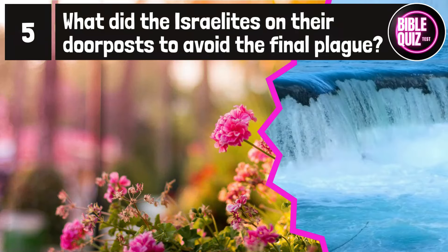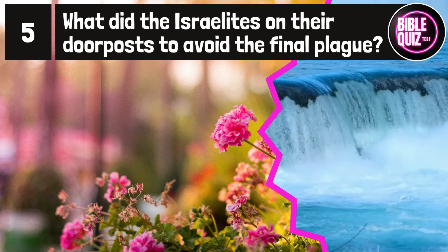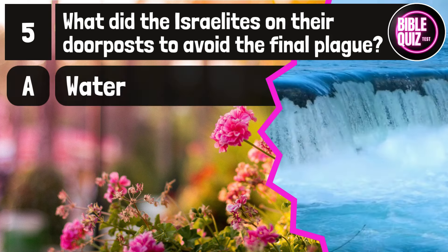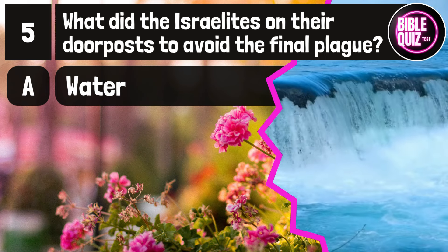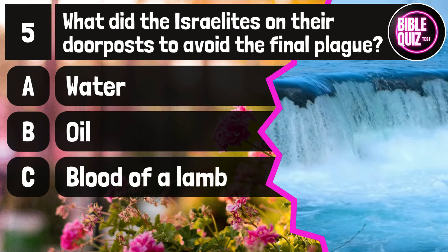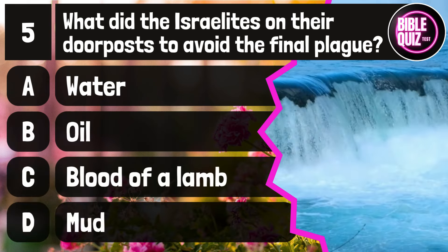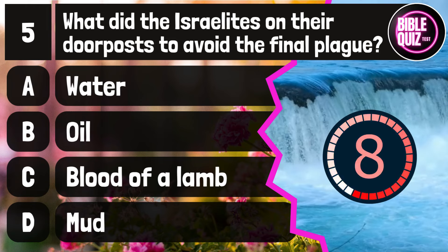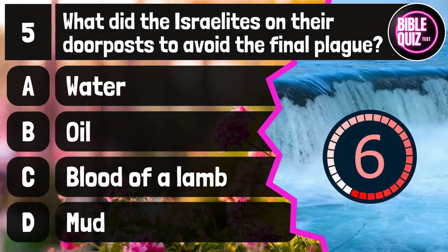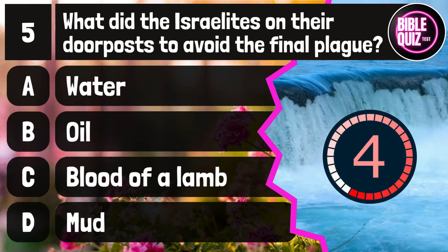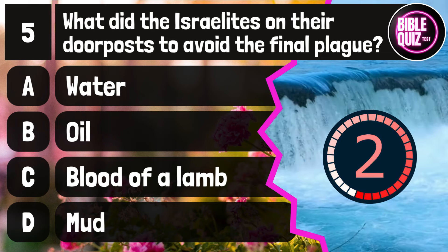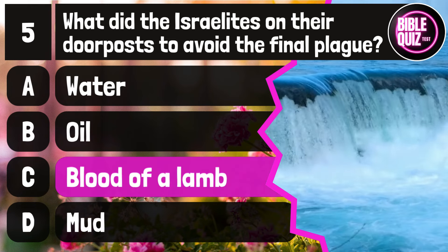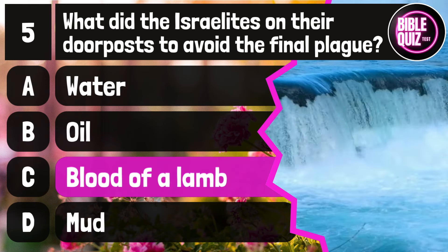Question number 5. What did the Israelites put on their doorposts to avoid the final plague? Option A: Water. Option B: Oil. Option C: Blood of a lamb. Option D: Mud. Time to think. The answer is option C: Blood of a lamb.